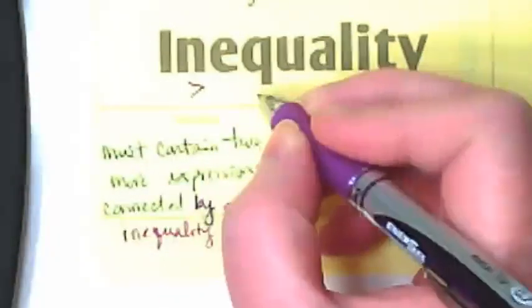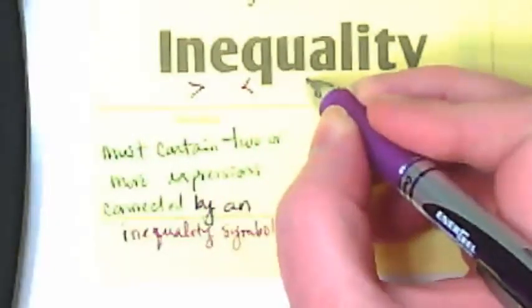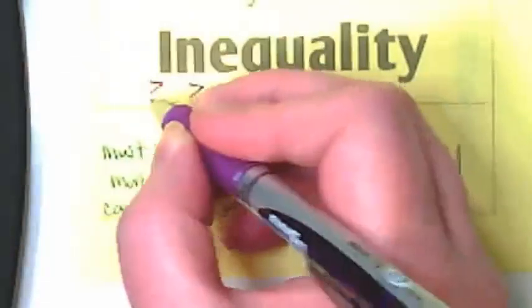What are the other inequality symbols we might see here? We have greater than, less than, greater than or equal to. Actually, I just put a less than or equal to when I said that. I'll put the greater than or equal to here. There's one more. I'm not sure I'm hearing it loud enough. Not equal to.